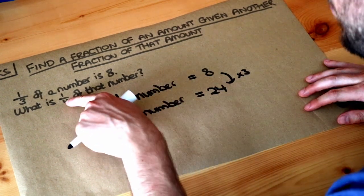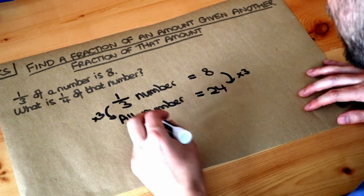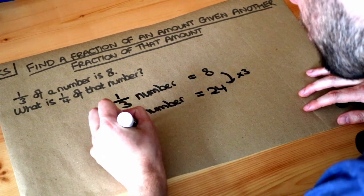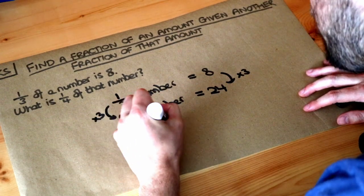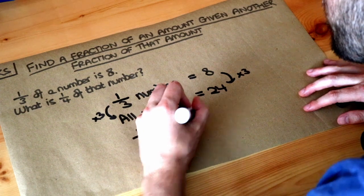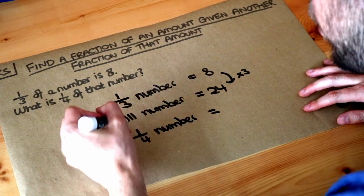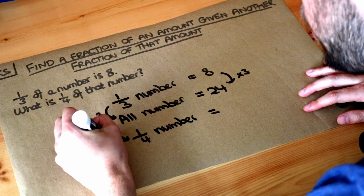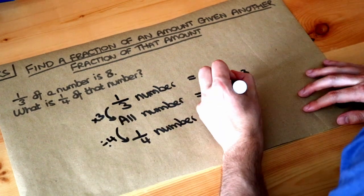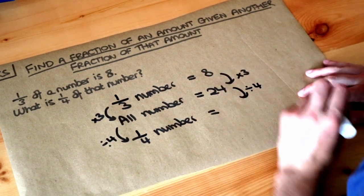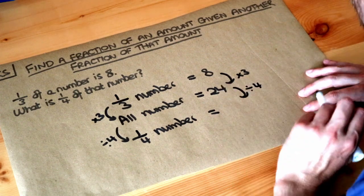Now, we've got an additional step here. We want to find a quarter of that number. So we know the number is 24 and we just want to find a quarter of the number. Now, you want to get from all the number to a quarter of the number. We just divide it by 4. So just divide that by 4, the 24 by 4 as well. 24 divided by 4.